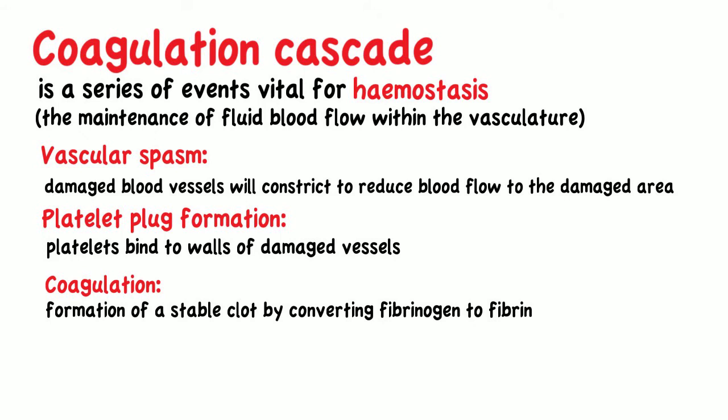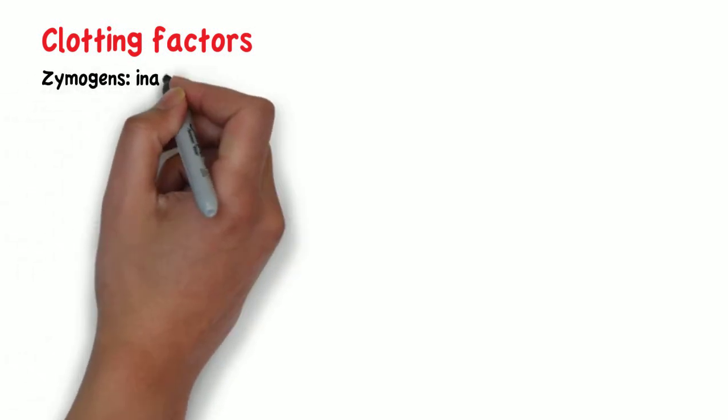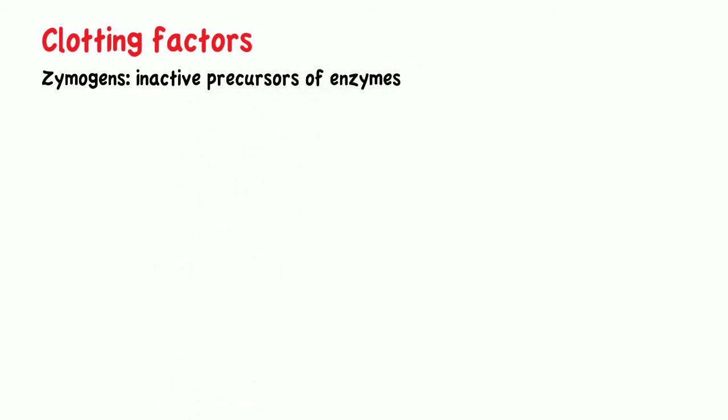The process of coagulation involves a series of proteins known as clotting factors. These factors circulate through the bloodstream as zymogens, or inactive precursors of enzymes, and are activated upon blood vessel damage or tissue damage.